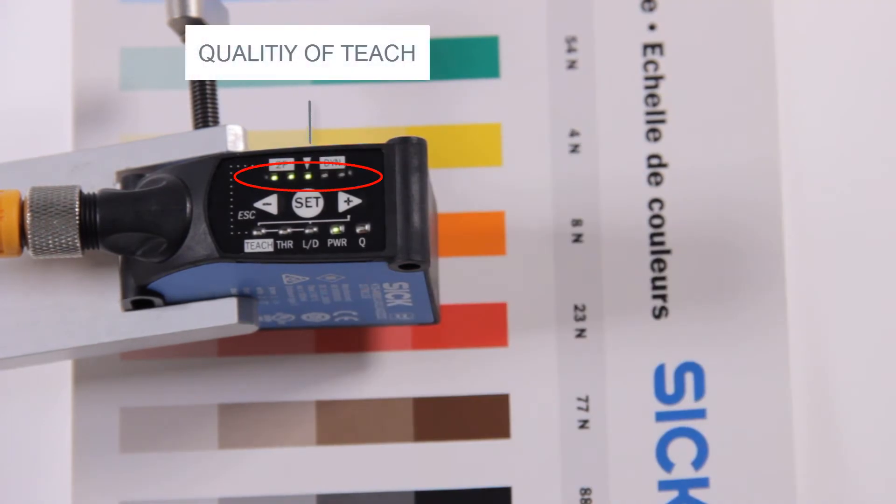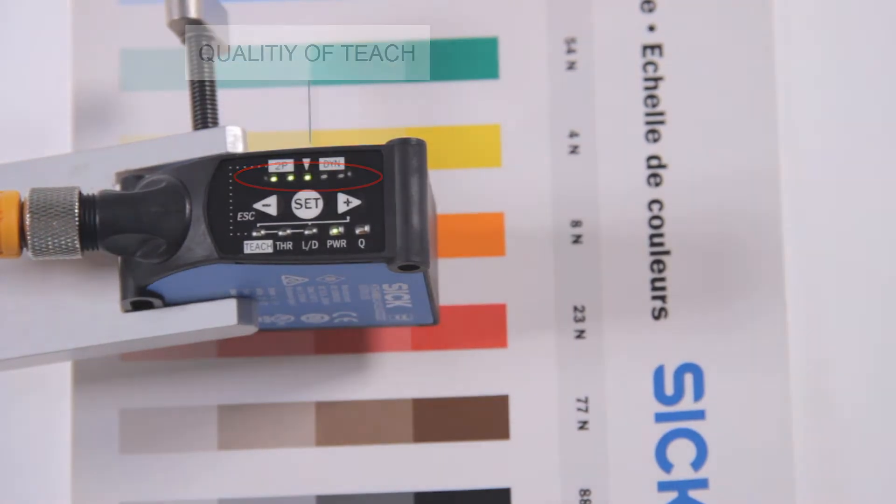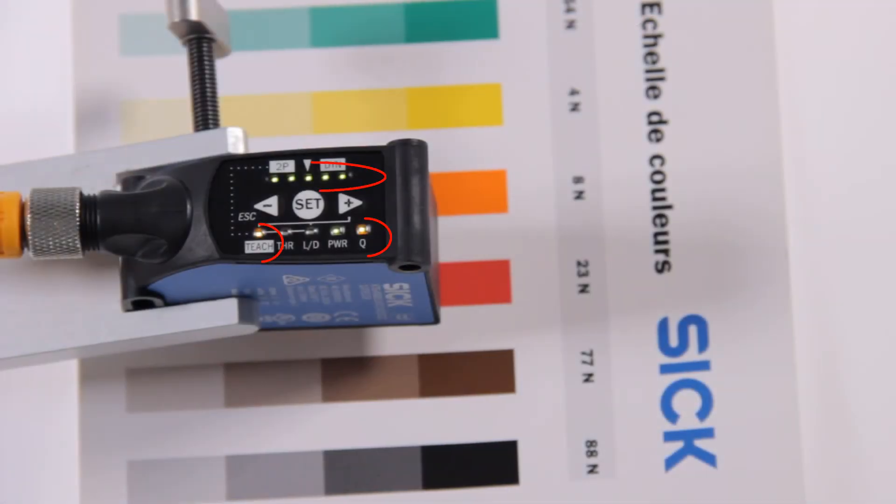The 5 LED bar graph indicates the quality of teach whereas 5 is the best result. A blinking bar graph as well as blinking yellow LEDs indicate a faulty teach. In this case confirm with the SET and redo the teach.